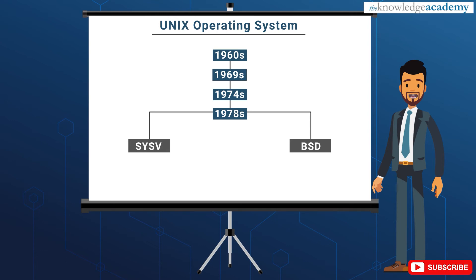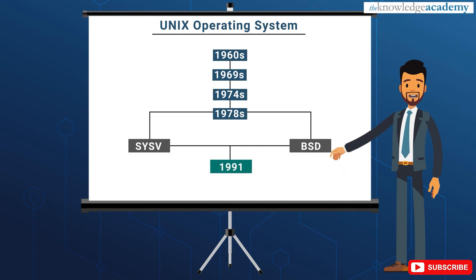However, some minor differences are to be found in the file system structure. Then in 1991, Linus Torvalds, a Finnish undergraduate student, developed Linux — a free, open-source Unix OS for PCs. Linux is neither pure CISF nor pure BSD. Preferably, it includes some features from each; for example, CISF-style startup files but BSD-style file system layout.